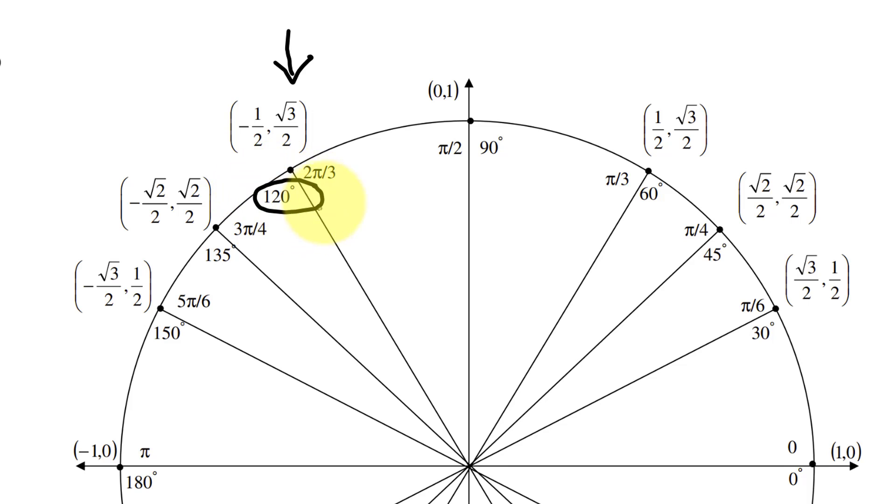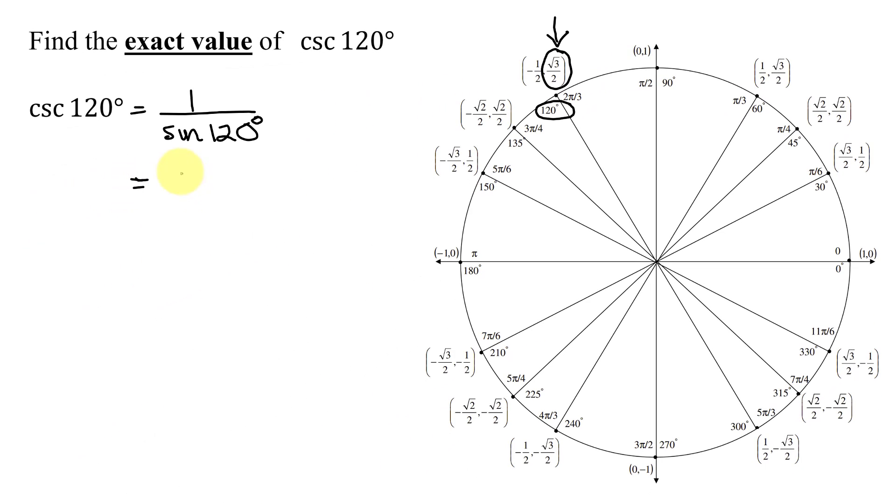So the sine of 120 degrees is just the square root of 3 over 2. So I have 1 divided by the square root of 3 over 2.